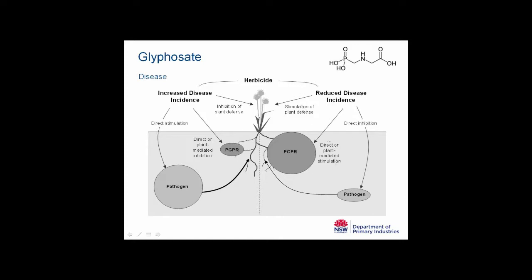Herbicides applied to the plant may also have indirect effects through the plant. Low level impacts that may not be visible to the naked eye can change the plant's biochemistry, and it may signal this change through the roots to the microbial community, again resulting in increased disease or potentially reducing disease. This again shows the complexity of the interaction and the fact that we really need to tease out under what circumstances we might be seeing more disease or not.